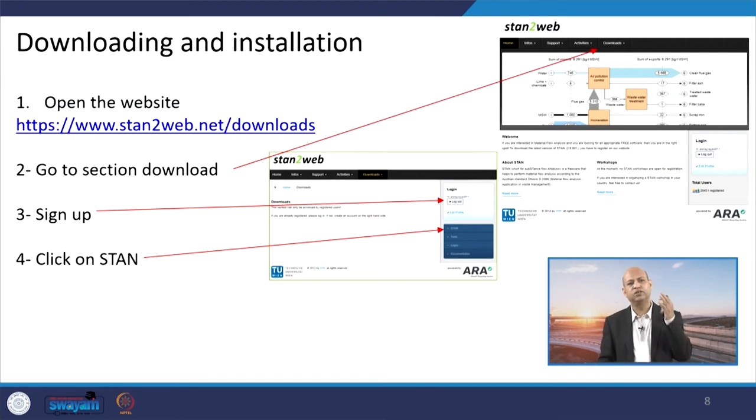When we talk about how do we really go for using this particular software or tool, first of all you need to visit this particular website where you can download this tool on your computer. Visit this website www.stan2web.net and go to the downloads. You will see this kind of website and there you can see, first of all you have to register yourself, you have to sign up, and then you can click STAN here. After signing up, you can click the STAN and download it.